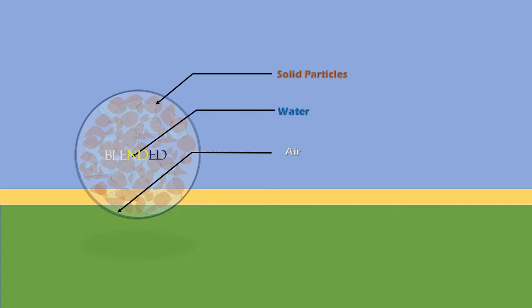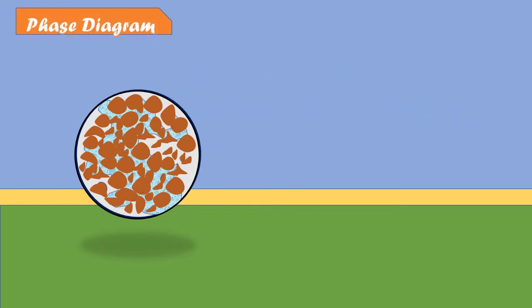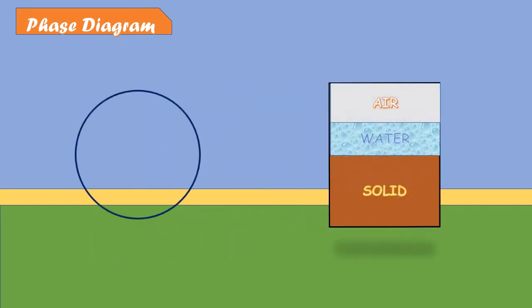The three constituents are blended together to form a complex material called soil mass. Now, let's talk about phase diagrams. As all constituents are blended together, however, for convenience, constituents are segregated and placed in different layers in a diagram.